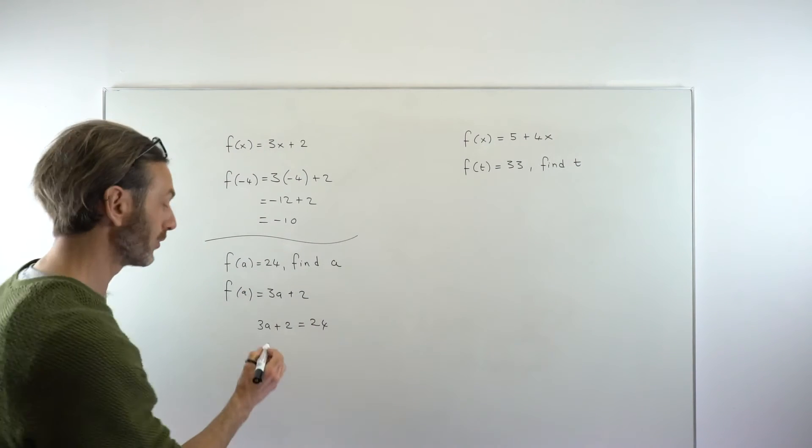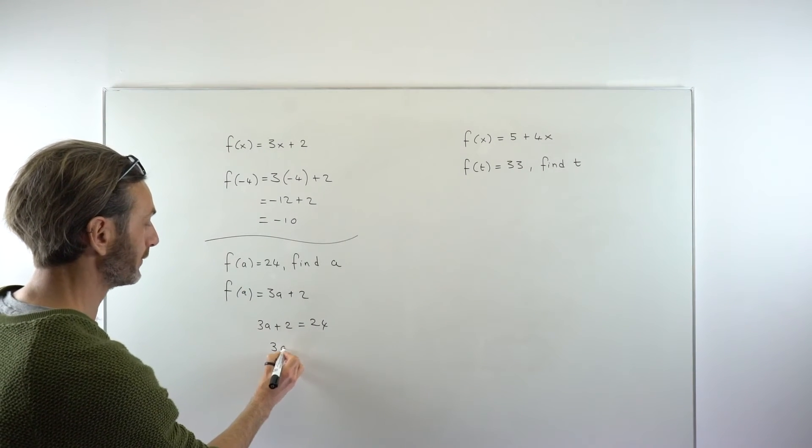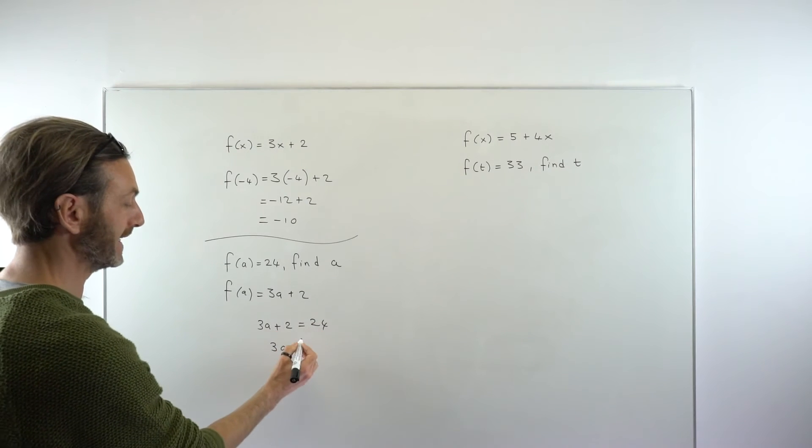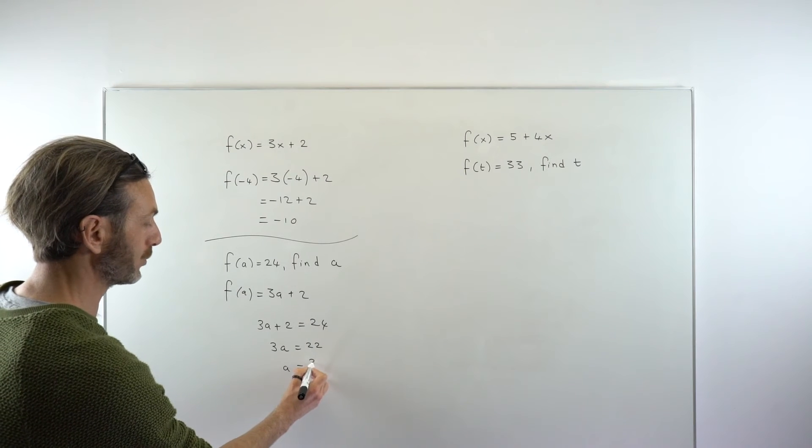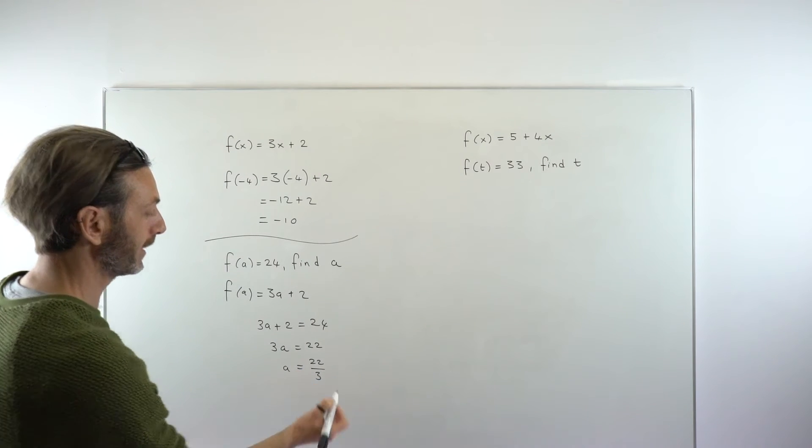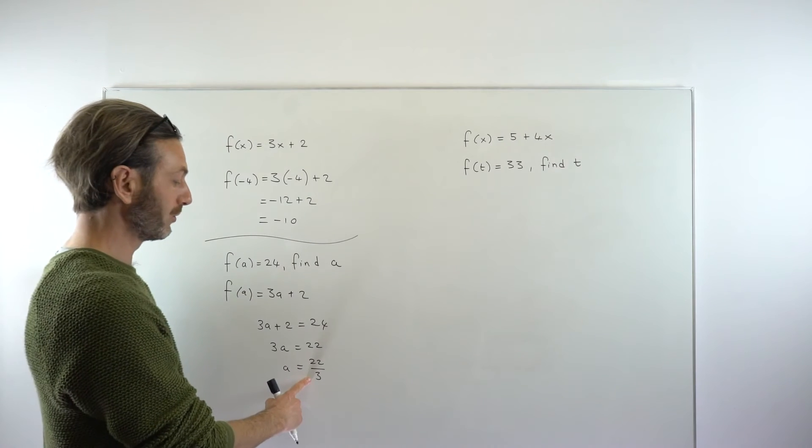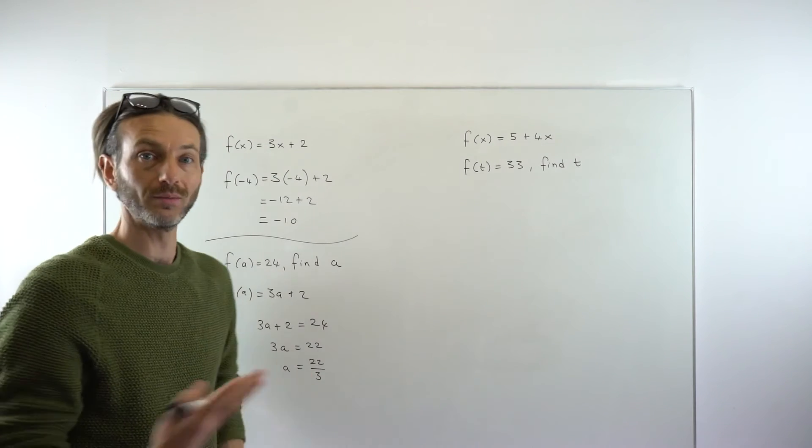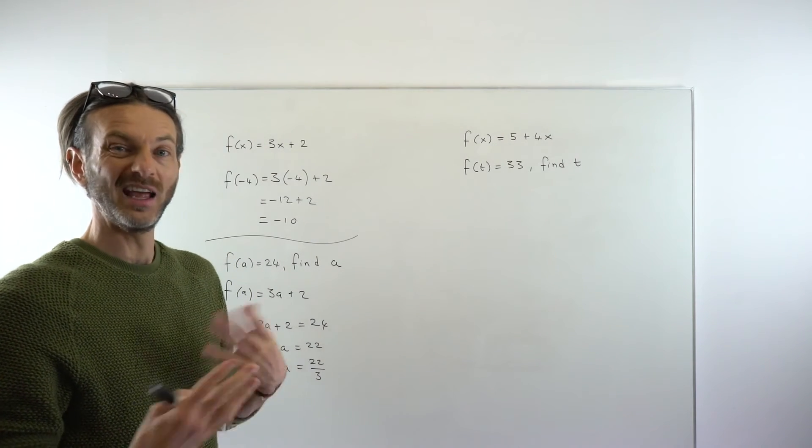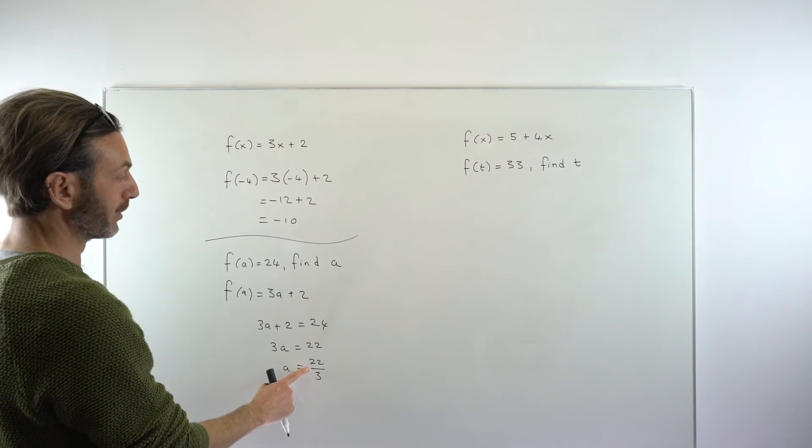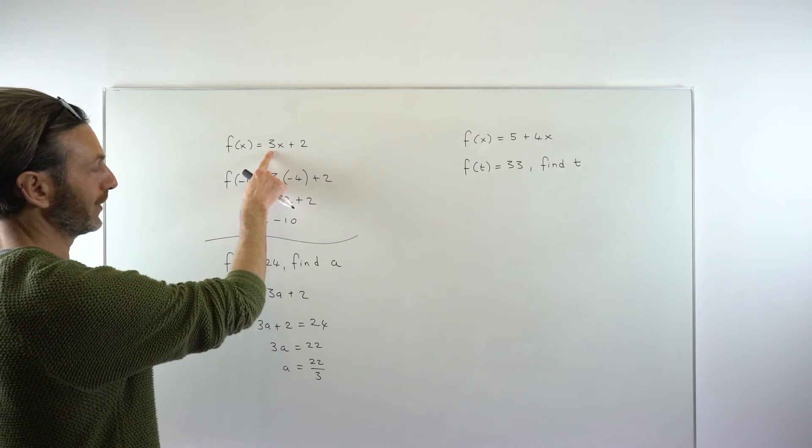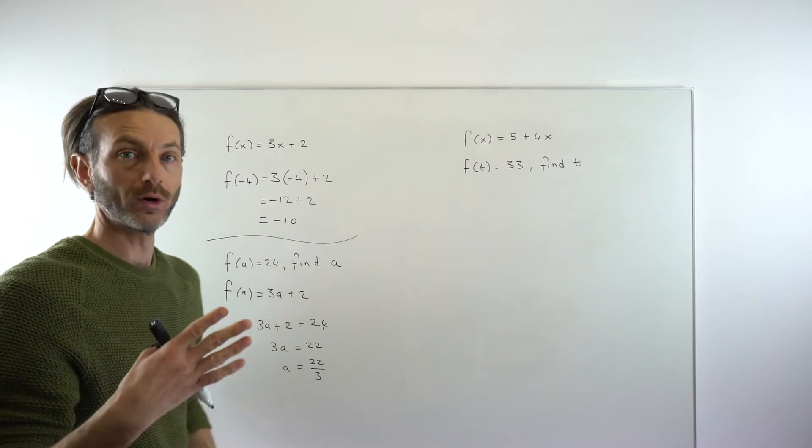Then it's just a little equation to solve, just like normal equations. So 3a equals 24 minus 2, which is 22. And then divide by 3 to get 22 over 3 as the final answer. This one's come out to be a sort of weird final answer. Sometimes they do, sometimes they're whole numbers, negative numbers. It could be anything. So this is telling us that if we put the number 22 over 3 into that original function, we would get the number 24 out.